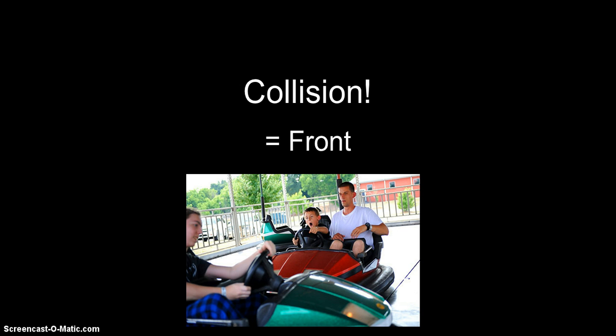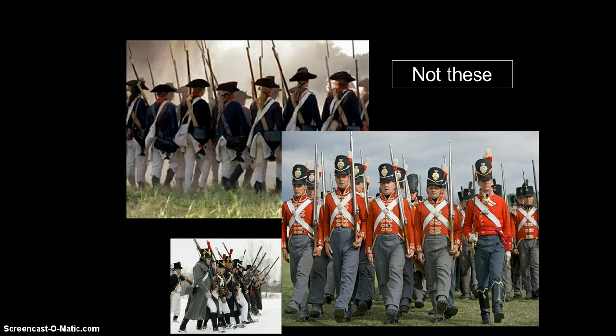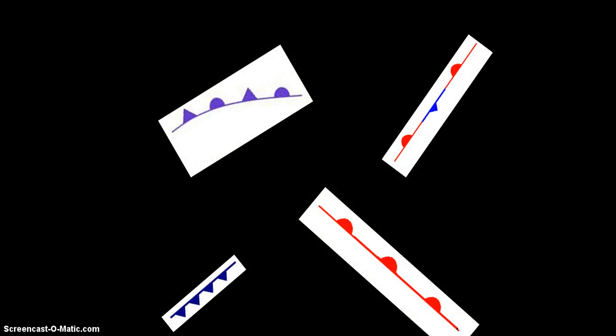Now, the next big thing to talk about is that air masses are very similar to global bumper cars. When you are in bumper cars, the thing that is likely to happen is a collision, and that happens with air masses on our Earth. We have different types of air masses, and they collide in different ways, and those are called fronts. You've heard these talked about on the weather before. We have four different types of fronts — these are the symbols we use to show the different types of fronts.